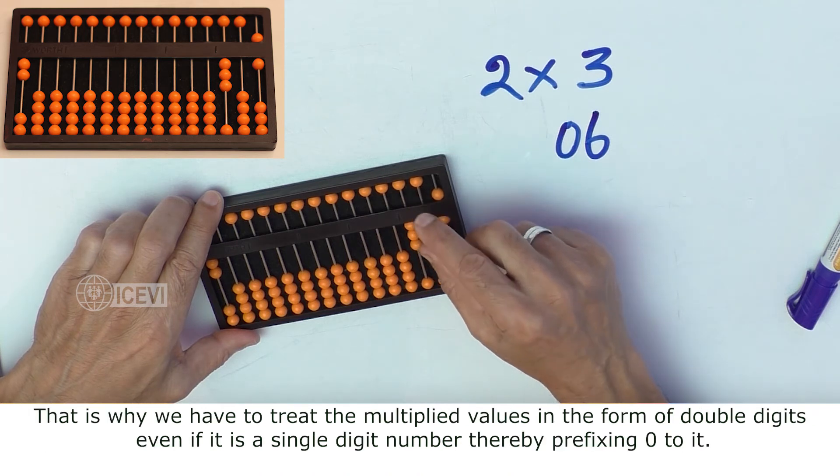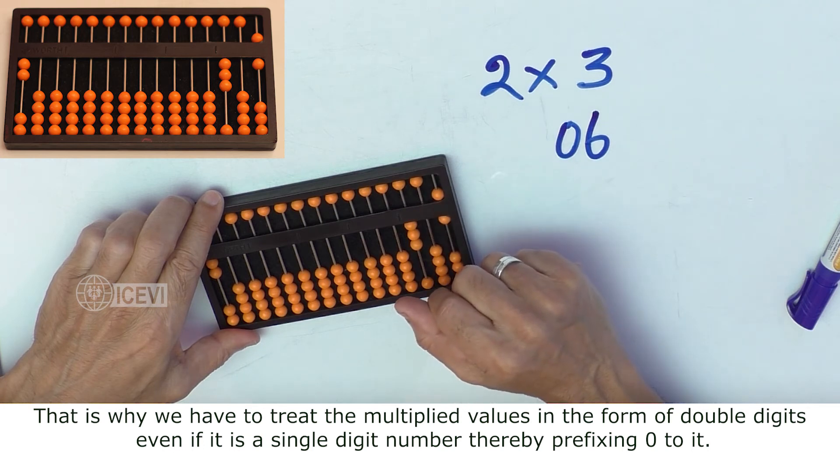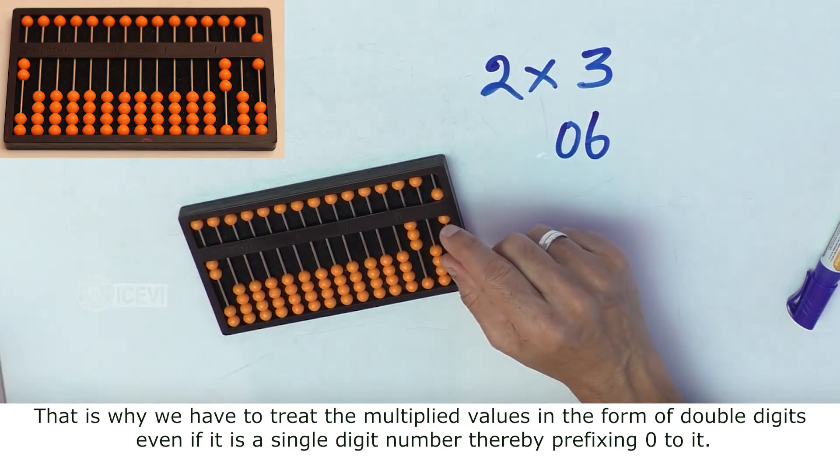That is why we have to treat the multiplied values in the form of double digits, even if it is a single-digit number, thereby prefixing 0 to it.